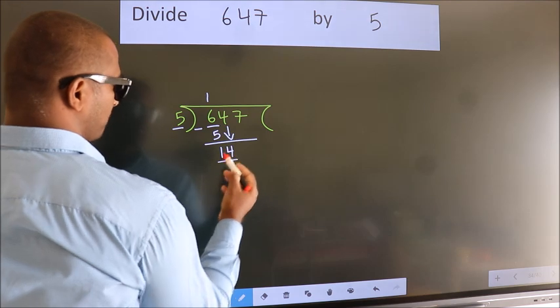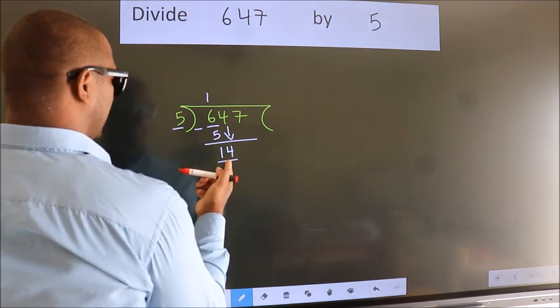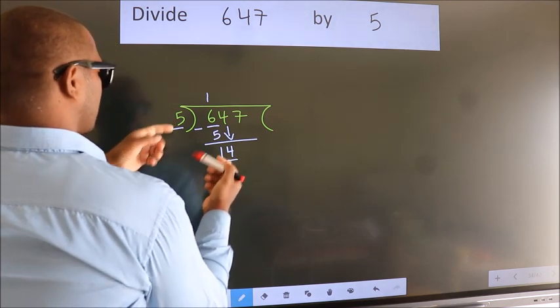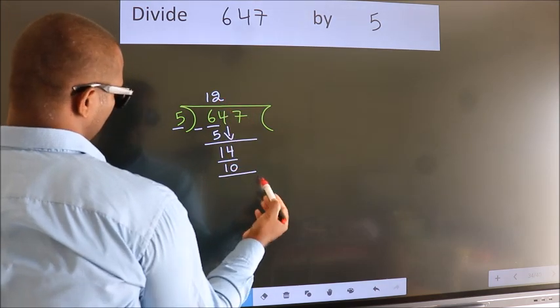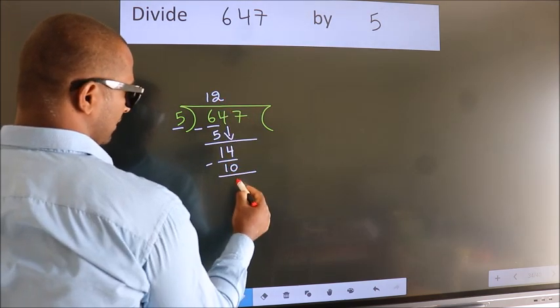So 14. A number close to 14 in the 5 table is 5 times 2, which is 10. Now we subtract and we get 4.